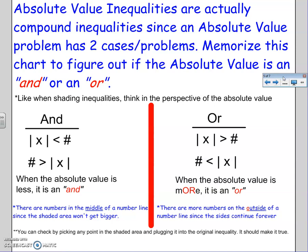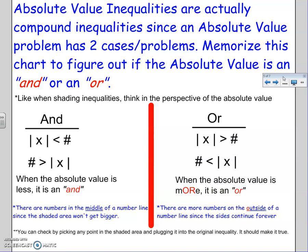Now, time for absolute value. Absolute value inequalities are actually compound inequalities, since absolute value problems have two cases — the positive and negative cases. I strongly recommend memorizing the chart to figure out if the absolute value inequality is an AND or OR, because that's the most confusing part. When the absolute value is less than the number — absolute value is smaller — it's an AND. Even if they write it backwards where a number is greater than the absolute value, that's still an AND. For ANDs, you shade in the middle because you're looking for the overlap.